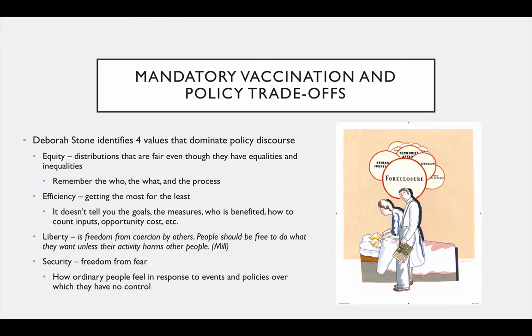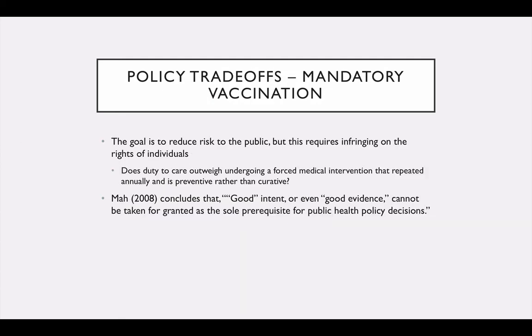Liberty is freedom, and we all want freedom. Deborah Stone quotes J.S. Mill and says liberty is freedom from coercion by others — people should be free to do what they want unless their activity harms other people. You can see why this would be an issue in the vaccination argument. And then security is simply freedom from fear, one way to think of it. How do ordinary people feel in response to events and policies over which they have no control? These are all things to consider in trade-offs.